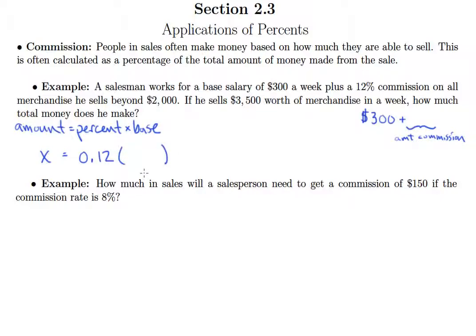Now remember the base is just what we're taking a percentage of. So when the commission is calculated, the question is, what are we taking that 12% of? Well, we have to be really careful while we read this. It says the salesman gets 12% commission on all merchandise he sells beyond $2,000. So he's got to get over that mark of $2,000 to make any commission at all. And then he only makes it on the money above $2,000.